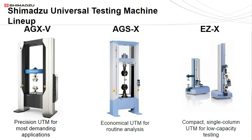Shimadzu has been manufacturing test frames for over 100 years and offers a wide variety of universal testing instruments. Our electromechanical systems include the Shimadzu AGX-V, AGS-X, and EZX. The AGX-V is Shimadzu's flagship model for the most demanding applications, such as CFRP testing and cutting-edge research and development. The AGS-X is Shimadzu's economical test frame designed for routine analysis. And the EZX is Shimadzu's compact, low-capacity test frame best suited for testing pharmaceuticals and medical devices.